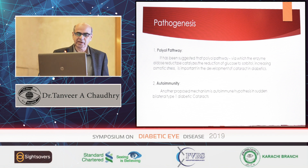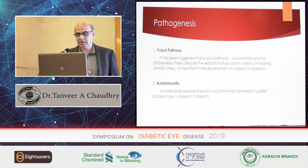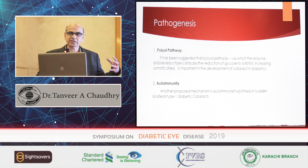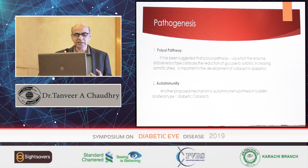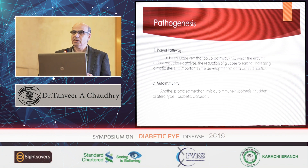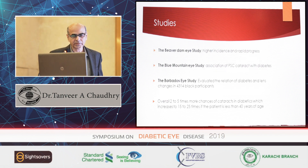A brief point about pathogenesis: it has been suggested that there is a polyol pathway in which the enzyme aldose reductase catalyzes the conversion of glucose into sorbitol. This increases osmotic stress within the lens, leading to cataract formation. Another proposed mechanism is autoimmunity, especially within three months of starting insulin treatment.